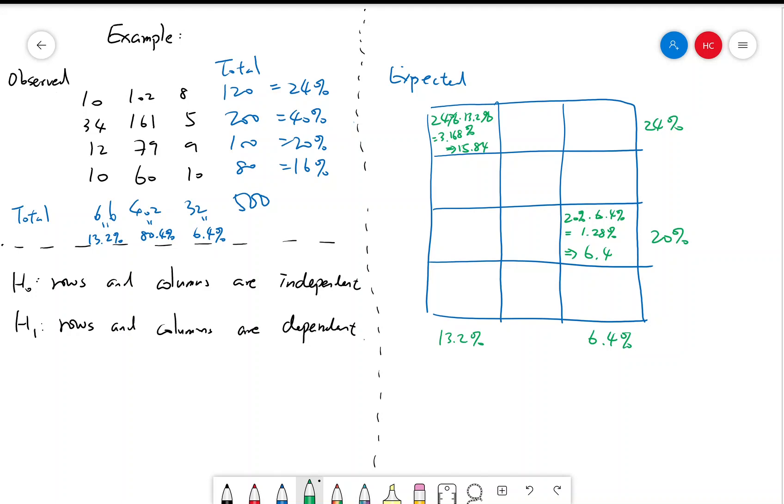And I'm not going to bore you with the rest of the calculations. I'm going to write it down. So this is 96.48%, 7.68%, 26.4%, 160.8%, 12.8%, 13.2%, 80.4%, 10.56%, 64.32%, and 5.12%. So that's our expected chart.